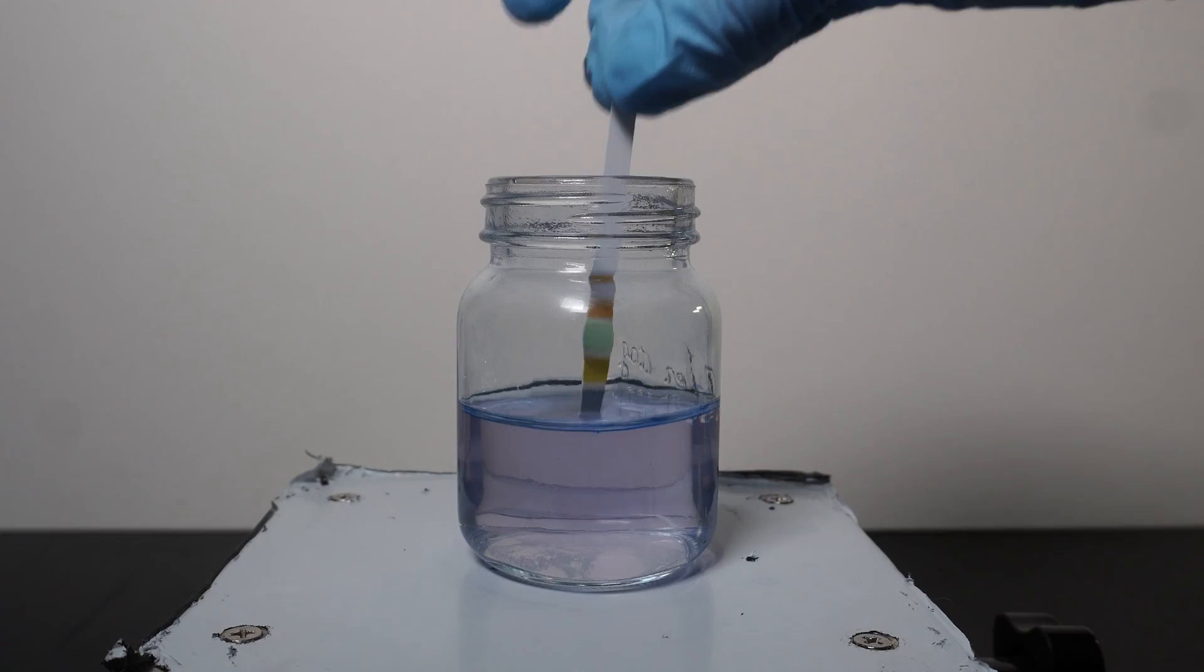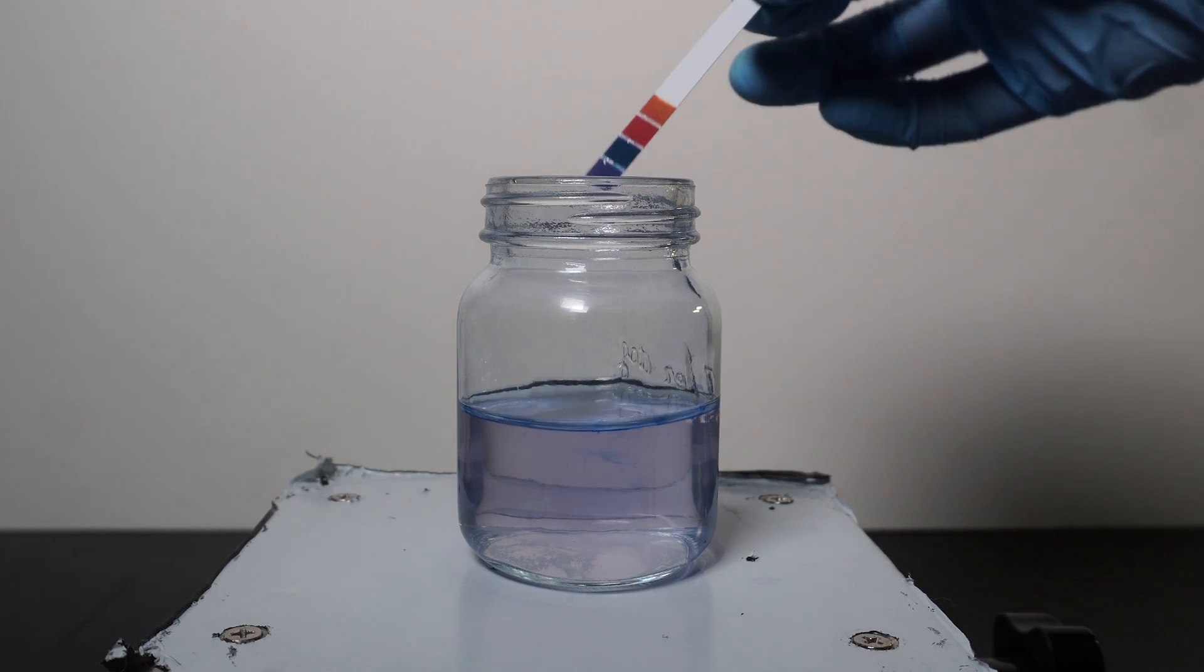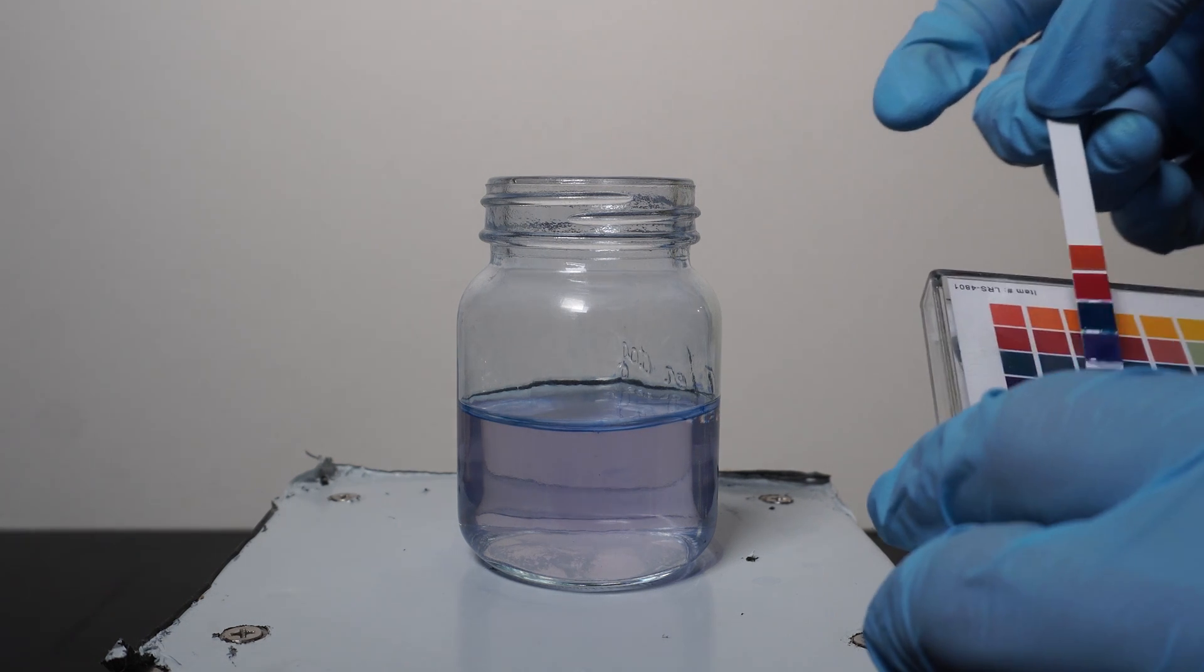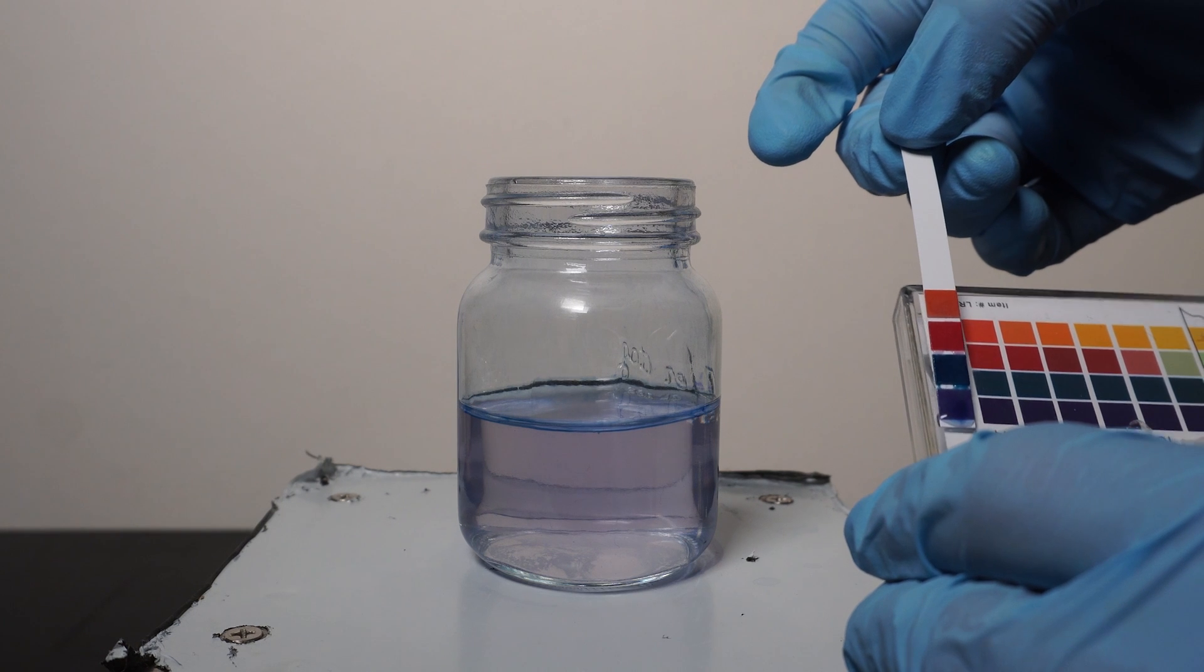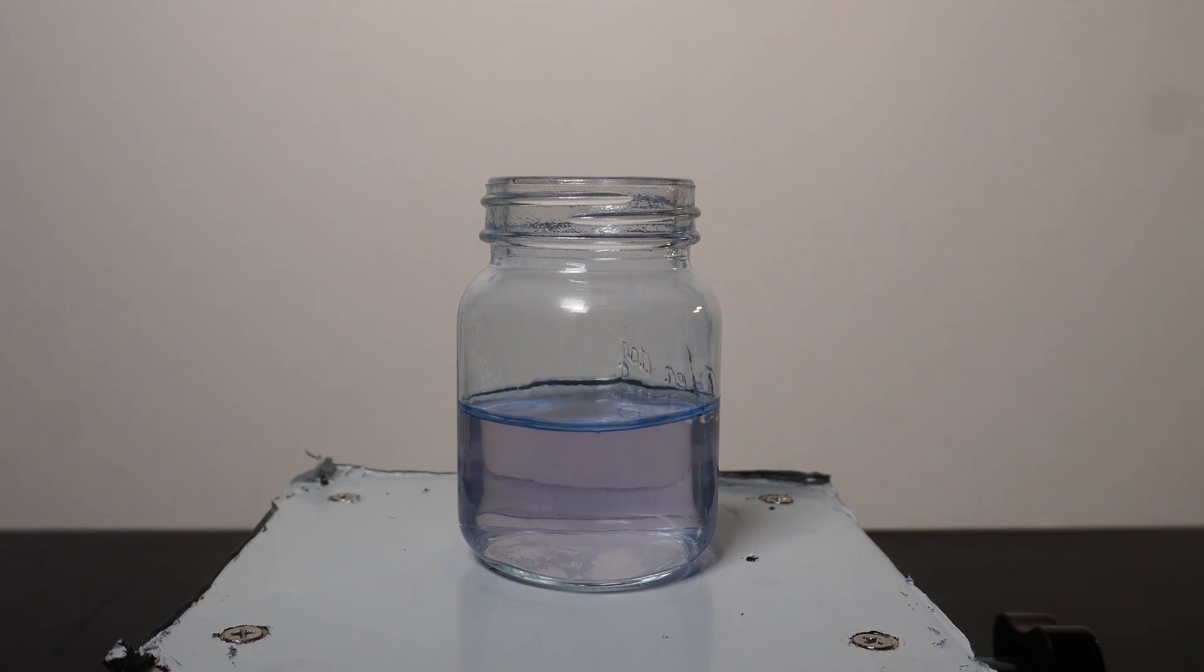After about 10 times, the solution will start to take longer and longer to reduce the methylene blue back to colorless. From here, I check the pH of our now used solution, and it comes out extremely basic, with a pH of around 13 or 14.